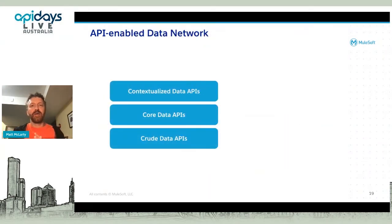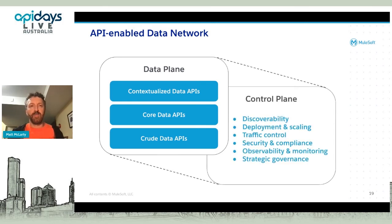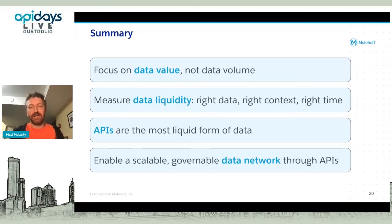One last thing: if we get away from worrying about where we're storing the data and think more from the consumer standpoint about how they're going to access it — managing the network of data — we can think of these APIs as the data plane, and impose a control plane across a data network normalized through APIs. That allows us to do all these system-wide functions: discoverability, deployment, scaling, and so on. To summarize: focus on data value, not volume; aim for measuring data liquidity; APIs are the touch points on the perimeter of the organization; and think about building and managing a data network through APIs.